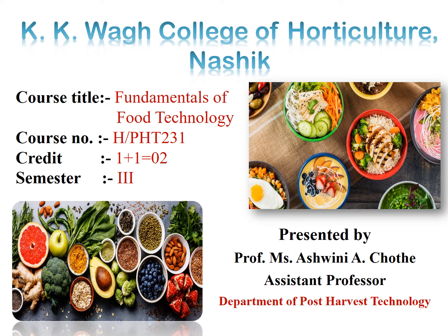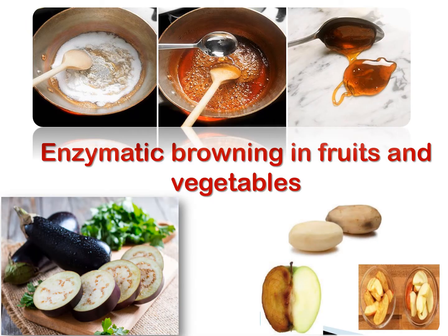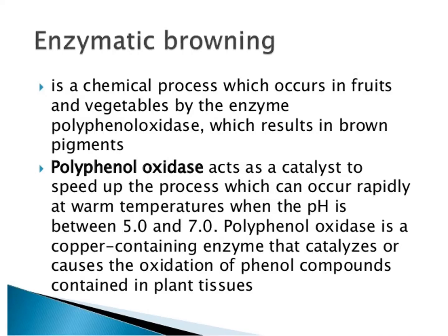Today we are discussing enzymatic browning in fruits and vegetables. Enzymatic browning is a chemical process which occurs in fruits and vegetables by the enzyme polyphenol oxidase, which results in a brown pigment. The polyphenol oxidase acts as a catalyst to speed up this process, which can occur rapidly at warm temperatures when the pH is between 5 to 7. Polyphenol oxidase is a copper-containing enzyme that catalyzes the oxidation of phenolic compounds contained in the plant.